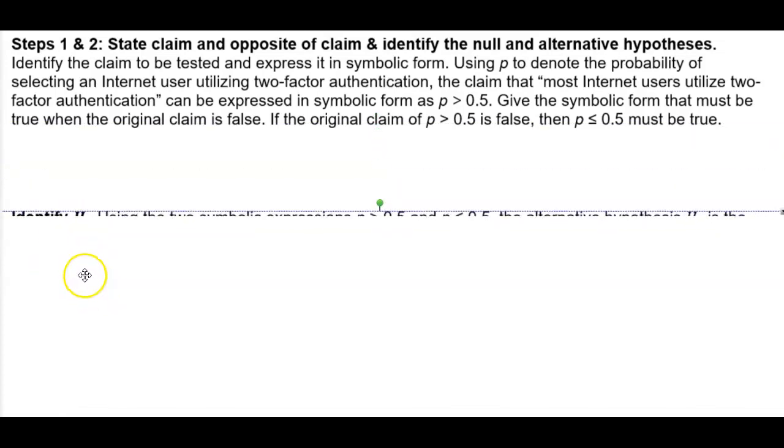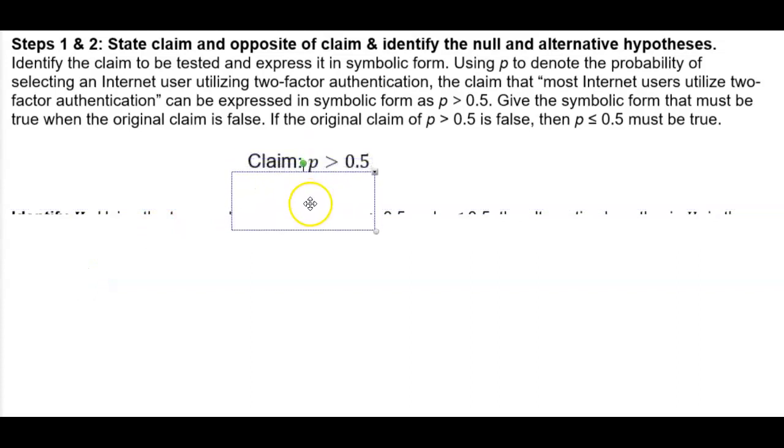So, let's take a look at that. We note the claim is the proportion is greater than 0.5. Now, the opposite would then be that the proportion is less than or equal to 0.5.